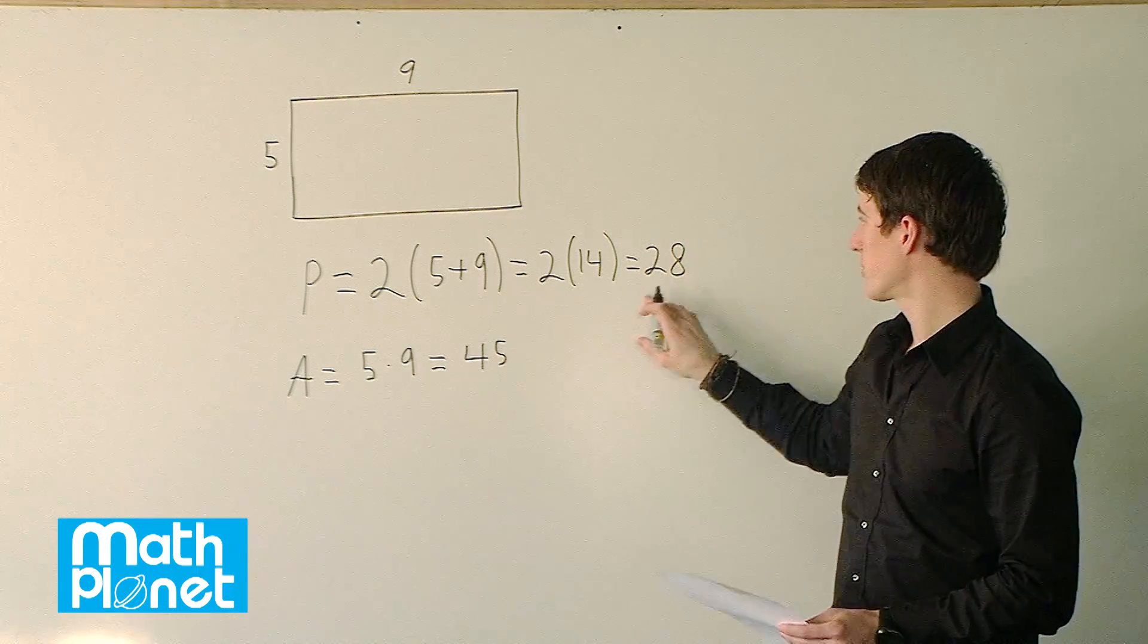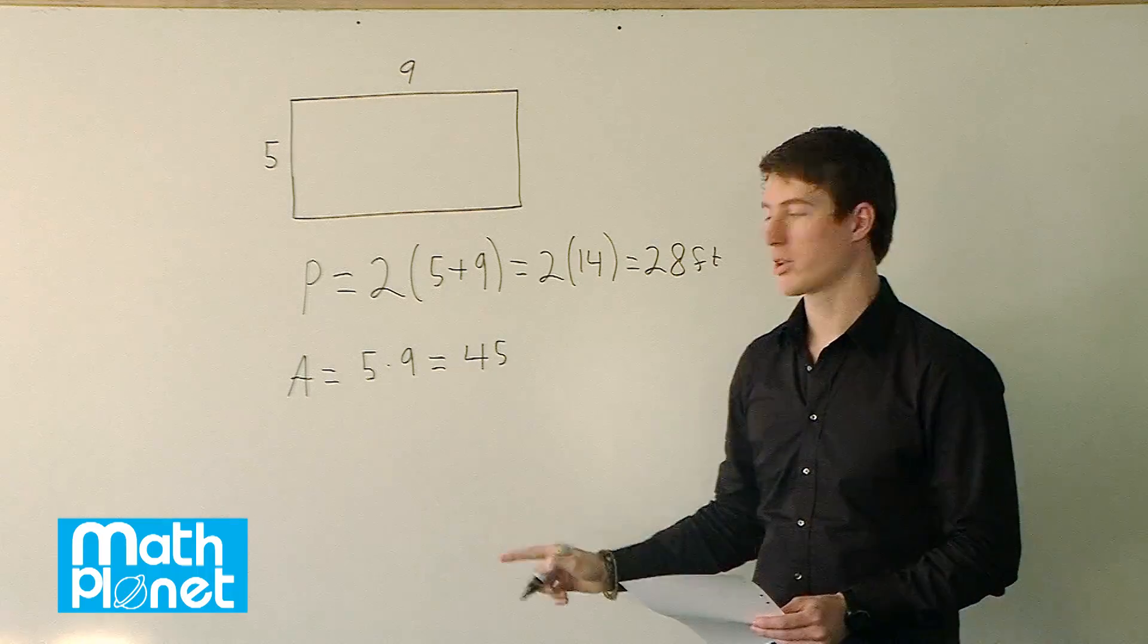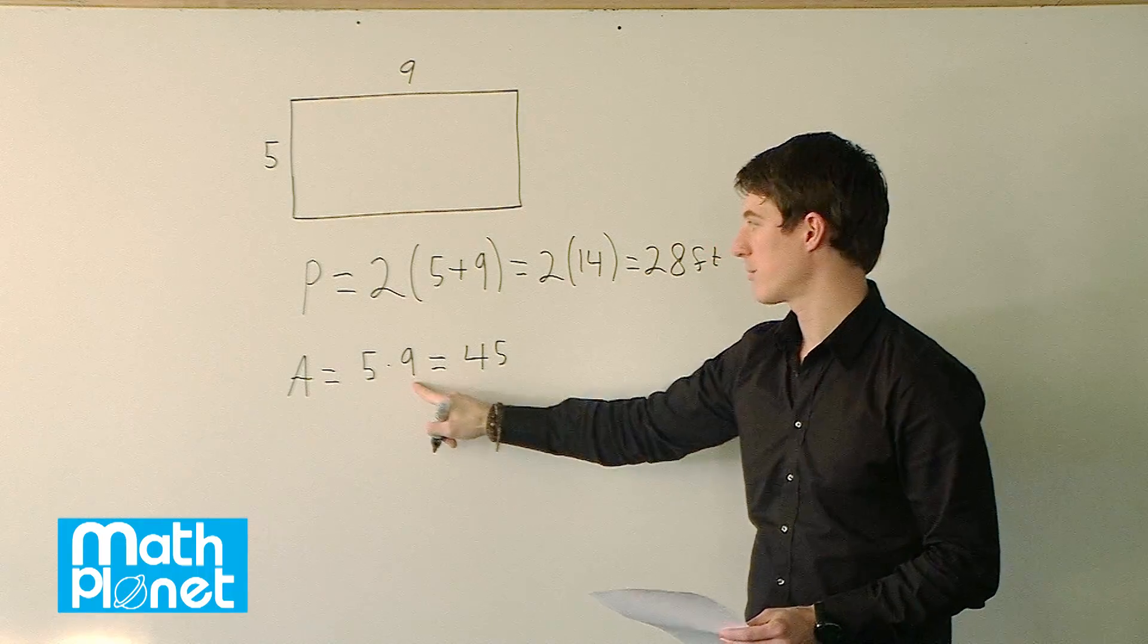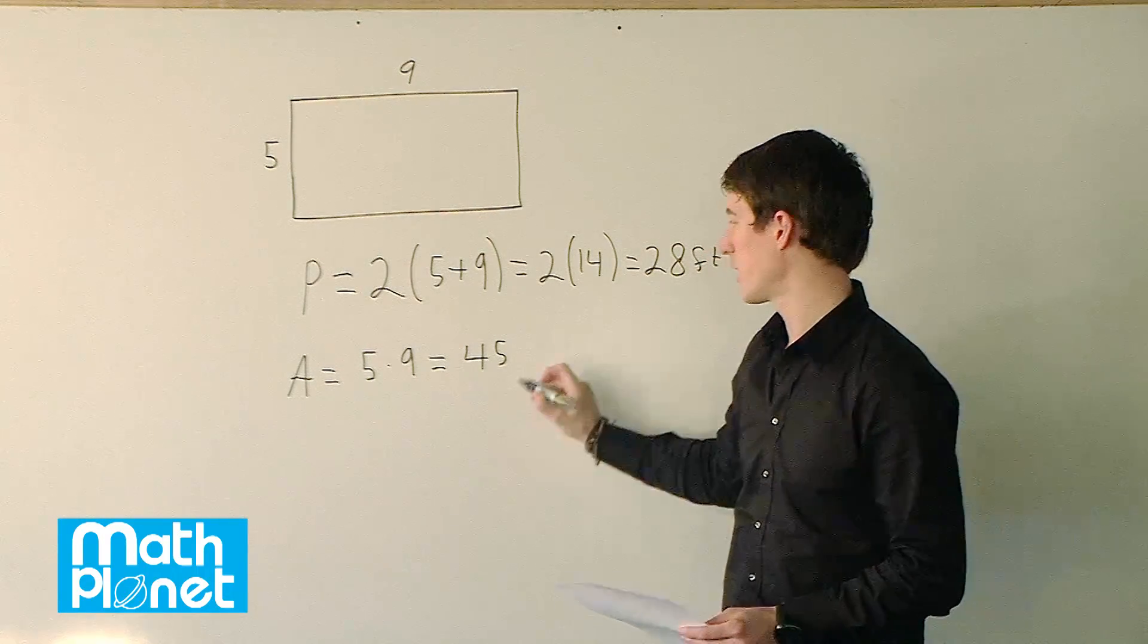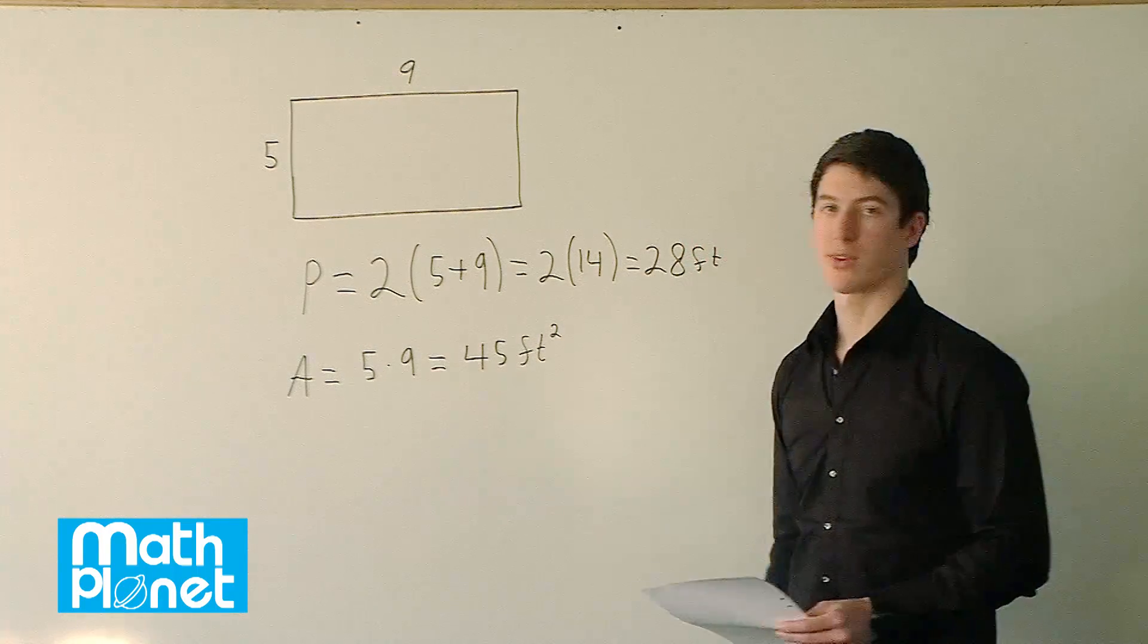So the perimeter is 28 feet, but since we're talking about units, we know that it's 5 times 9 here, so feet times feet, or we would say feet squared. So 45 square feet.